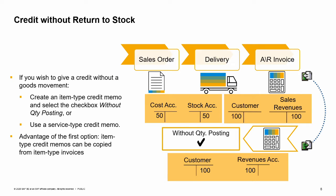An item type credit memo normally returns items to stock as well as gives a credit for the items. If you wish to give a credit but not create a goods movement, you have two choices: you can create an item type credit memo and select the checkbox without quantity posting on the item row, or you can use a service type credit memo. The advantage of using an item type credit memo with the without quantity posting checkbox is that it can be copied from an item type AR invoice, and you can list the item numbers. Neither of these are possible with a service type credit memo.